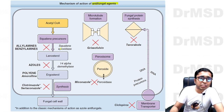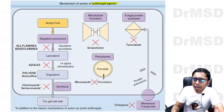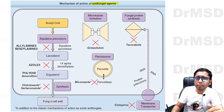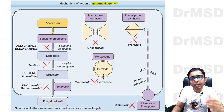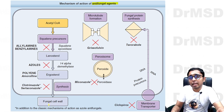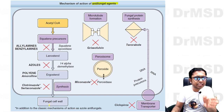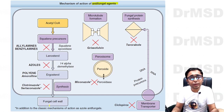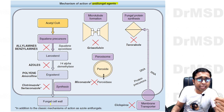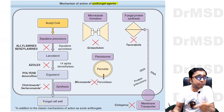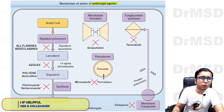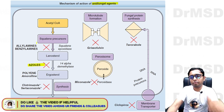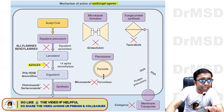The mechanism of action of antifungal agents is to destroy the fungus either by disrupting its protein synthesis or by damaging its cell wall synthesis. The azole group of medications acts by inhibiting 14-alpha-demethylase, because of which fungal cell wall formation is disrupted.